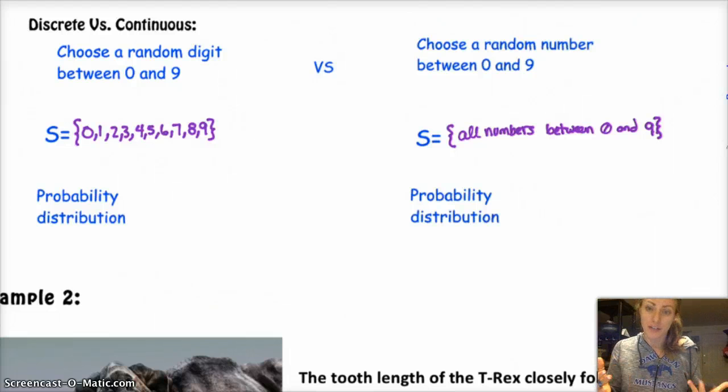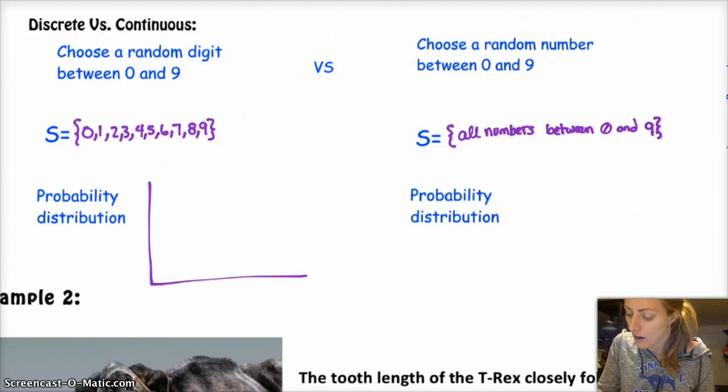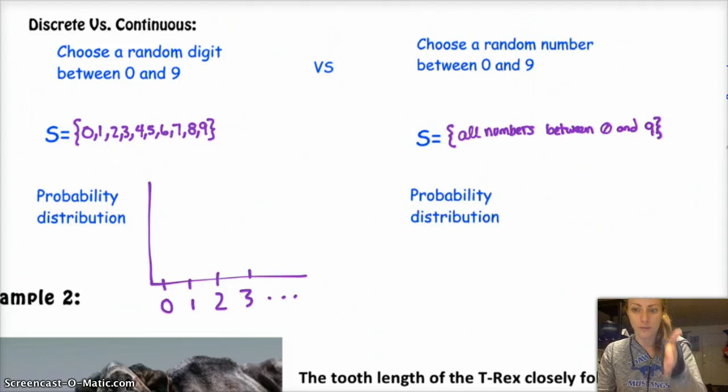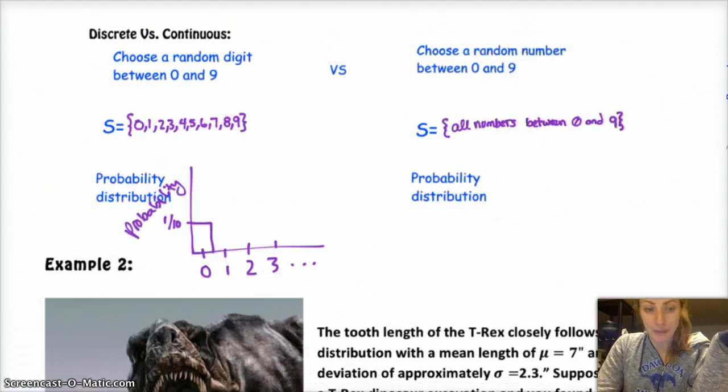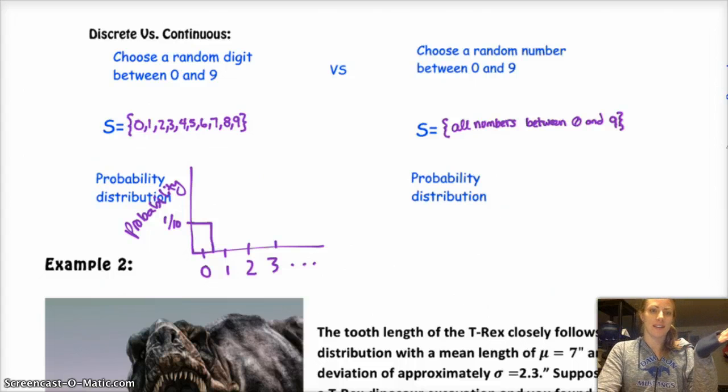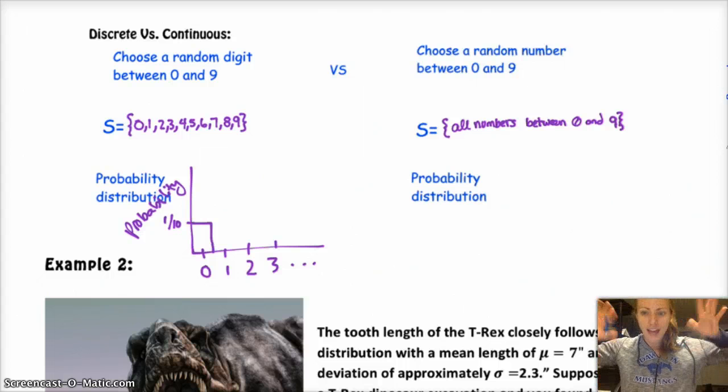So the probability distribution for the discrete random variable would look something like this, right? Where your options are 0, 1, 2, 3, you kind of get the idea. And you put on the y-axis the probability of that event occurring. So the probability of getting a 0 out of these options is 1 out of 10. Similarly, the probability of getting a 1 from 0, 1, 2, 3, 4, 5, 6, 7, 8, 9 is 1 out of 10. And same for 2, same for 3, all the way up to 9. And notice if I make all those boxes, the area underneath should be the total probability of my entire sample space in all of my options, which should be 1, and it is. My width is 10, my height is 1 tenth, 10 times 1 tenth is 1.